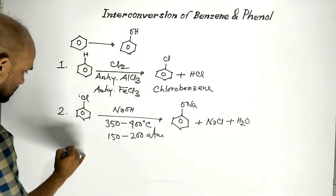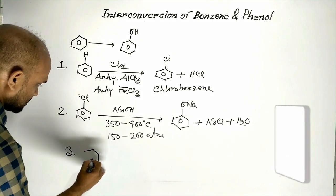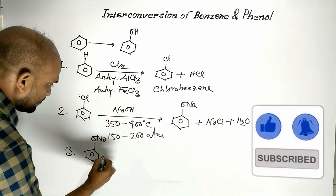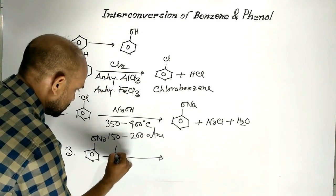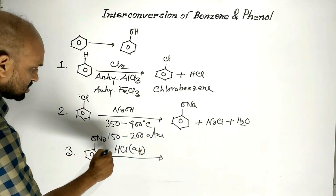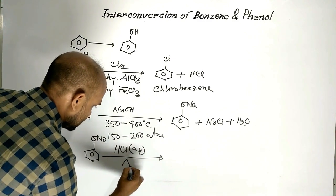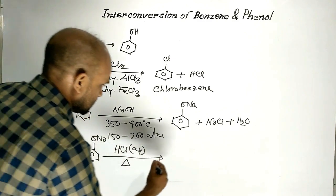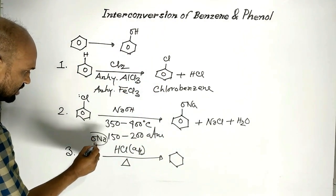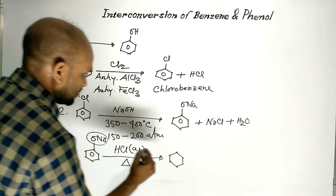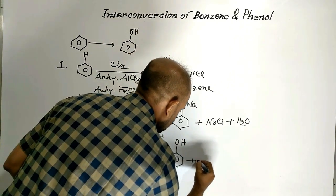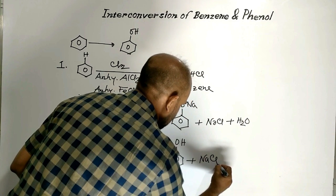Now sodium phenoxide is treated with aqueous hydrochloric acid and the reaction is conducted by heating. Then ONa is replaced by OH. Here by-product is sodium chloride.